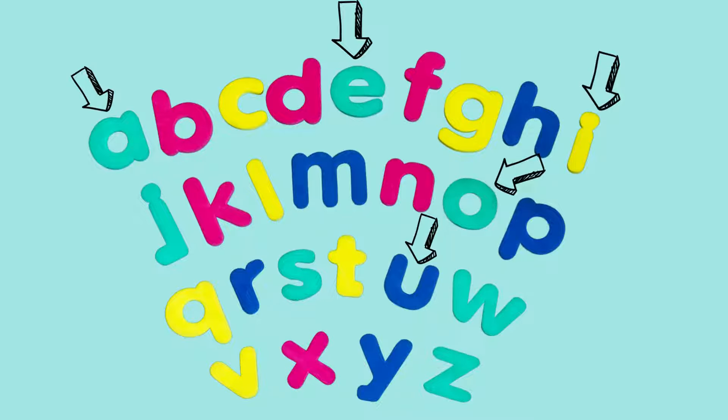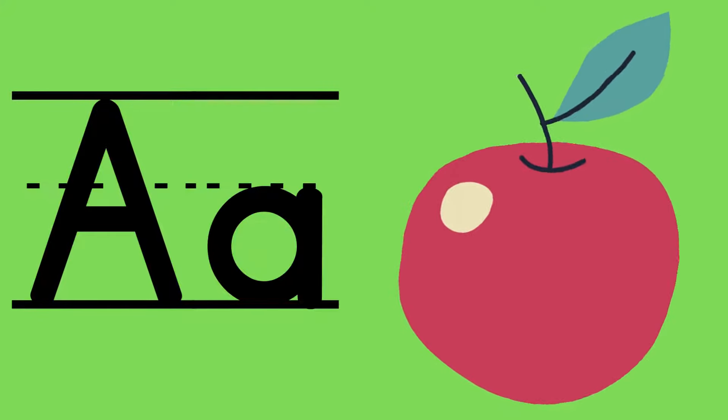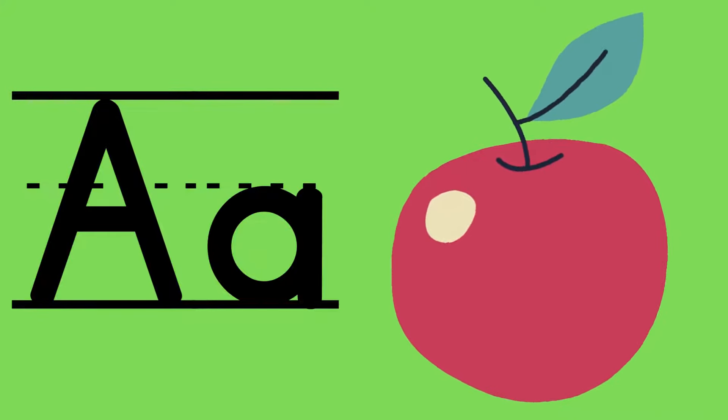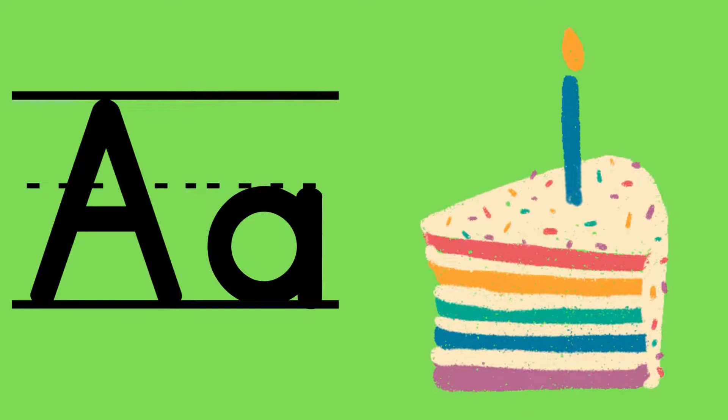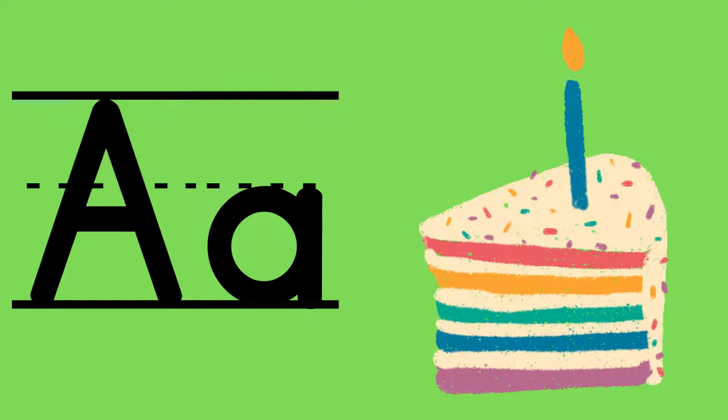A's short sound is 'a' as in apple. A's long sound is just it saying its name: 'ā' as in cake.